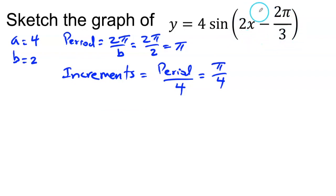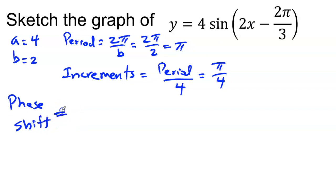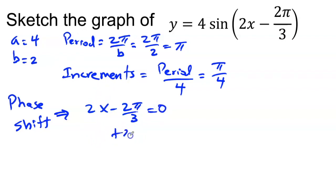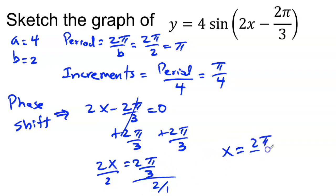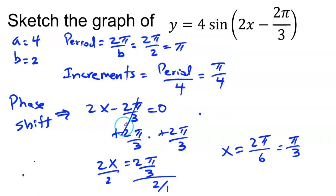Today's difference from the previous video is that I am moving horizontally. Whatever is in the parenthesis is going to be my horizontal movement — this is called a phase shift. My phase shift is found by taking what's inside the parenthesis, 2x minus 2π over 3, and setting it equal to 0. Solving for x: add 2π over 3 to both sides, giving 2x equals 2π over 3, then divide by 2. X equals π over 3. That's my phase shift.